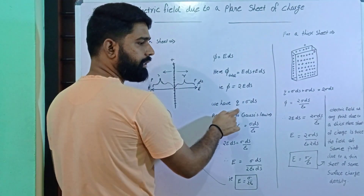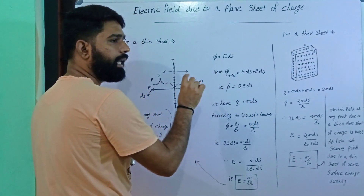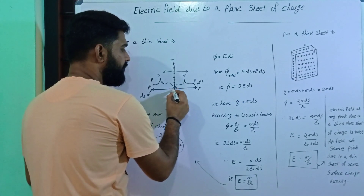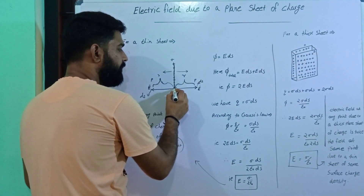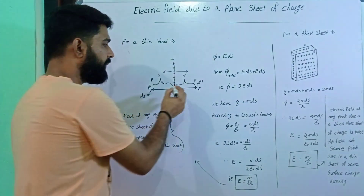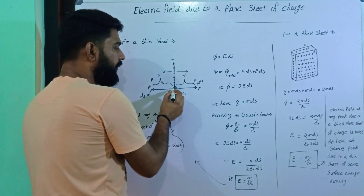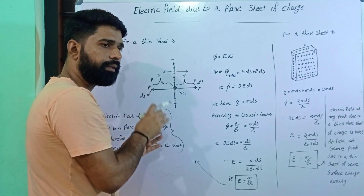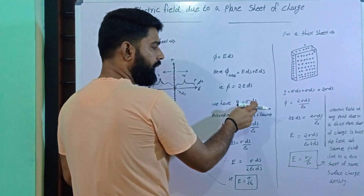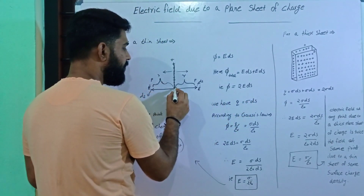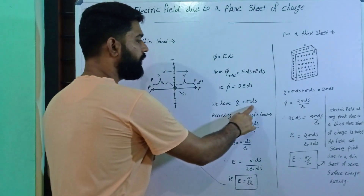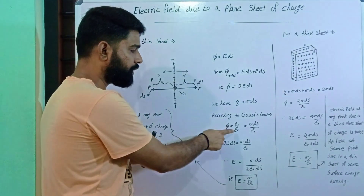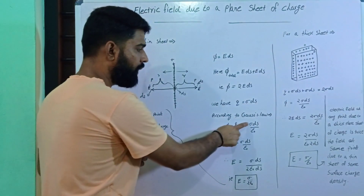Now consider the charge density. The elementary area is dS and the charge density is σ, so the total charge enclosed is q = σdS. According to Gauss's law, φ = q/ε₀, so φ = σdS/ε₀.